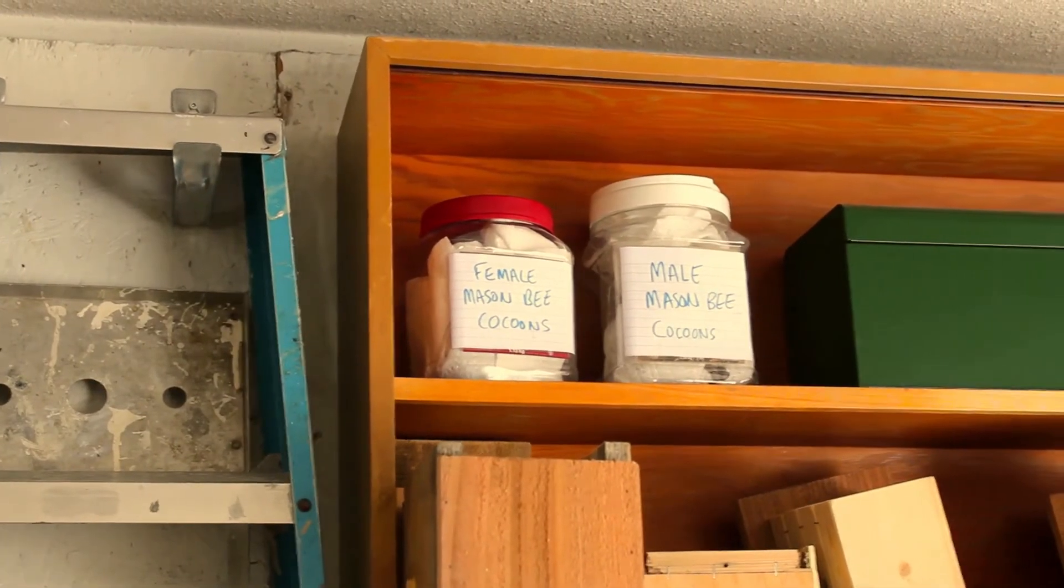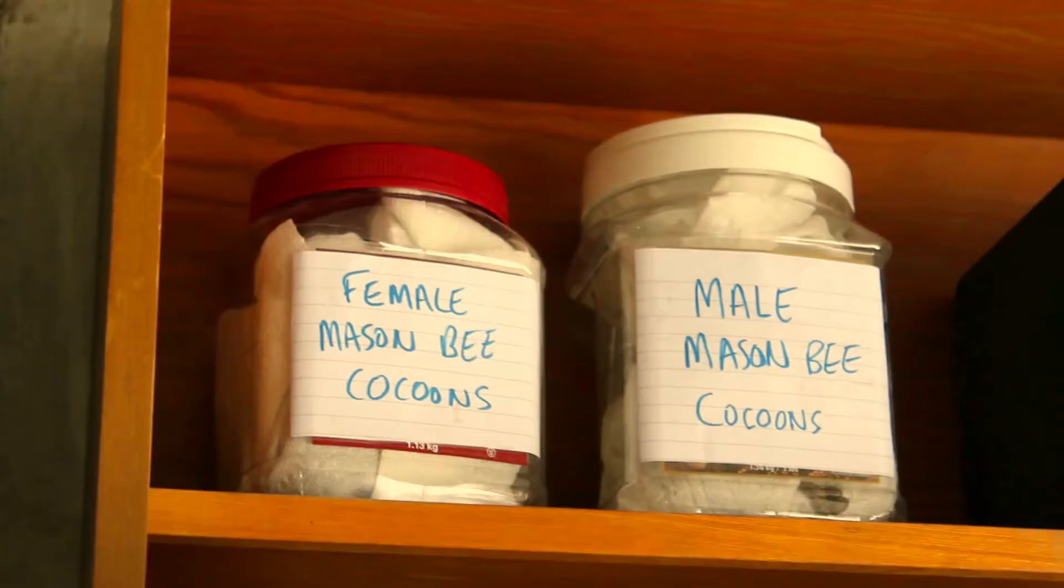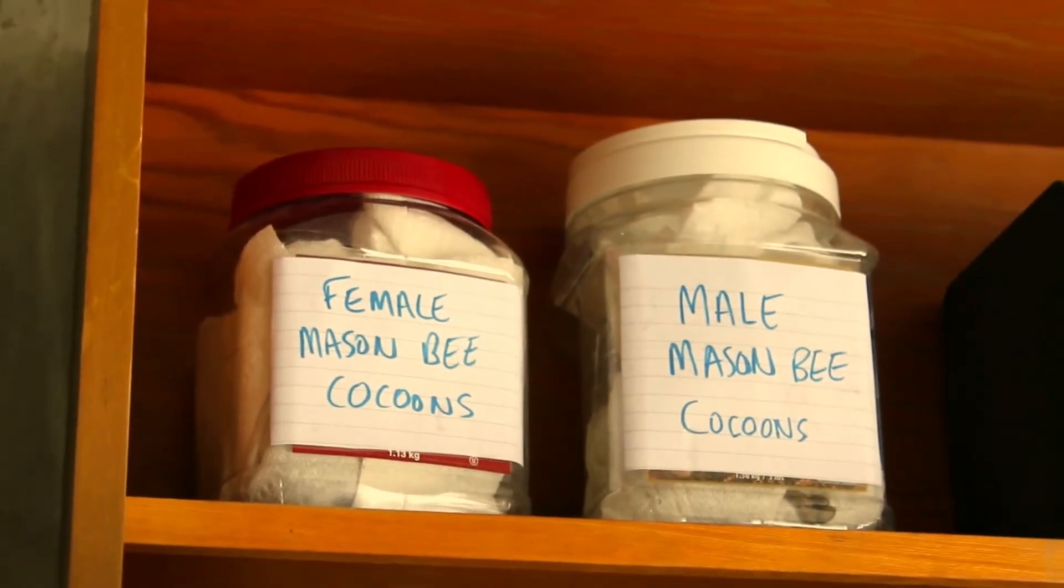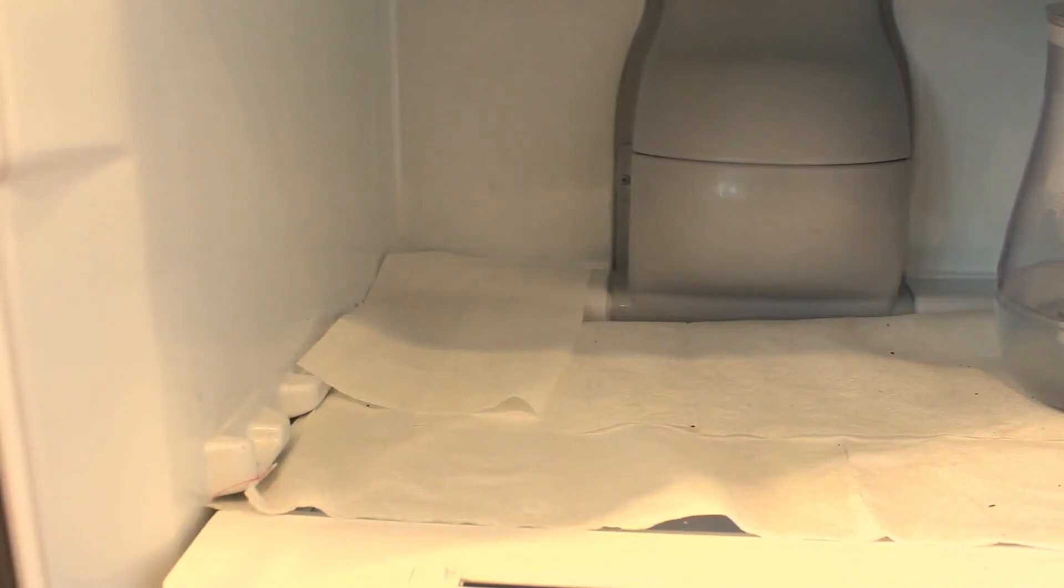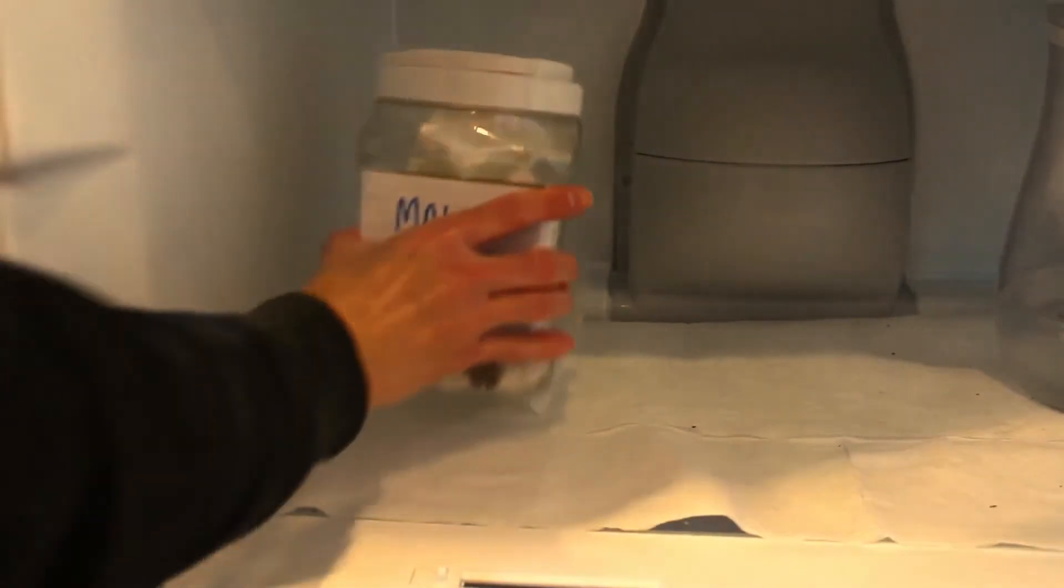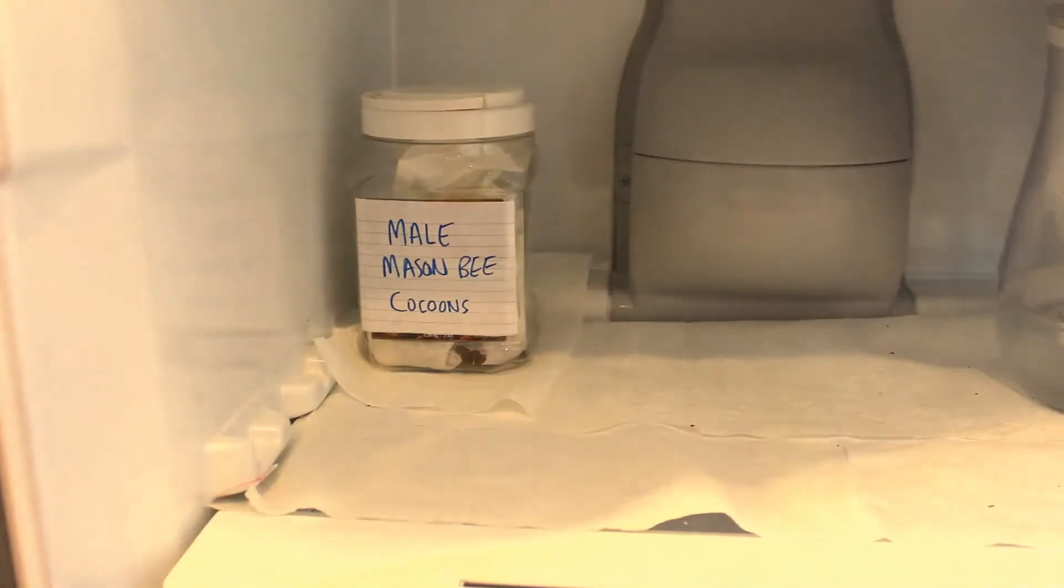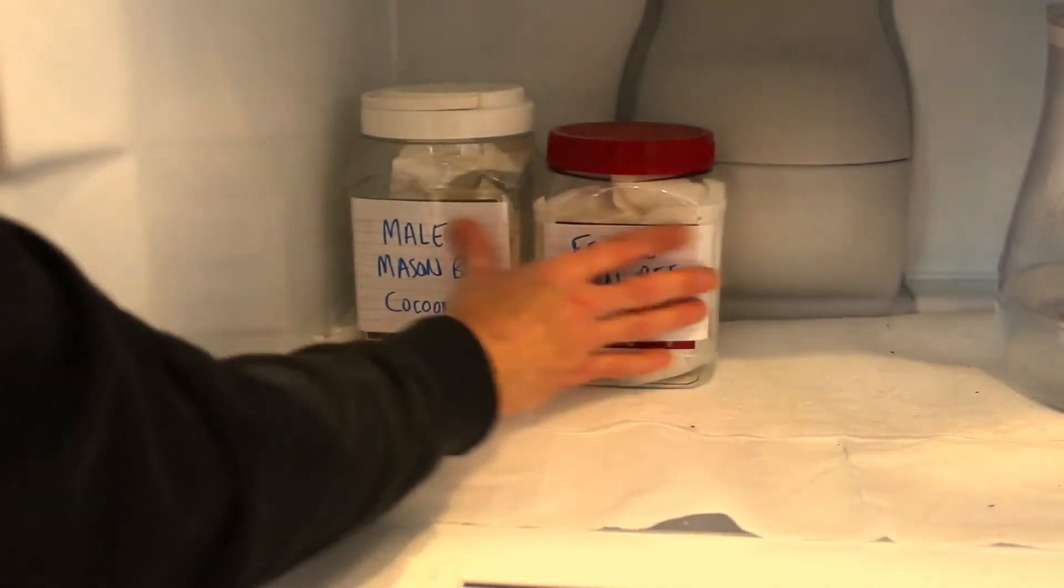The storage containers can now be left in a dry cool place like a garage for most of the winter months. They can then be transferred to the fridge in February or just before release time.